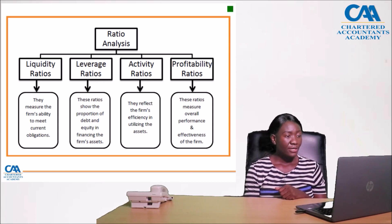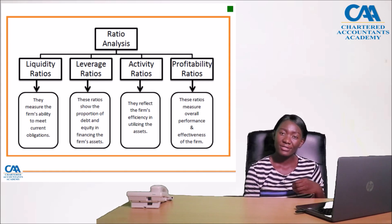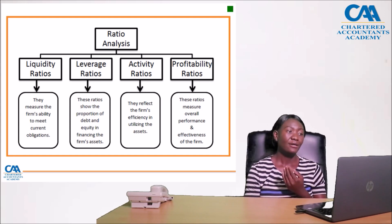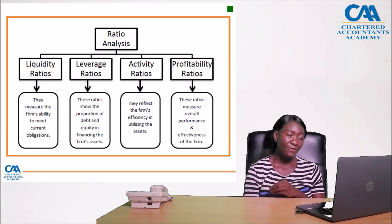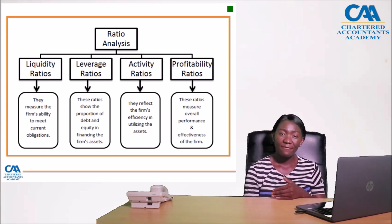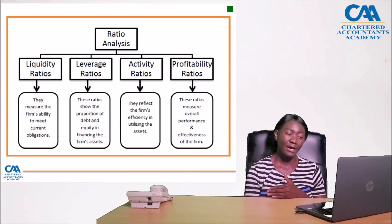Activity ratios reflect the firm's efficiency in utilizing its assets — including inventory turnover, debtor days, and creditor days. Profitability ratios measure the overall performance and effectiveness of the firm, while activity ratios measure how efficient operations are in utilizing the assets.